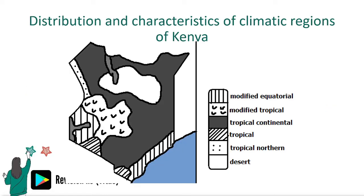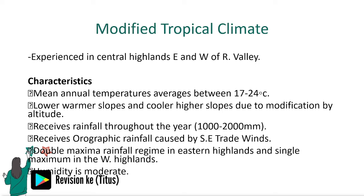We proceed to the modified tropical climate, which is experienced in the central highlands, east and west of the Rift Valley. In these areas, the mean annual temperatures average between 17 and 27 degrees Celsius, humidity is moderate, they receive rainfall throughout the year, and there are lower warmer slopes and cooler higher slopes due to modification by altitude.